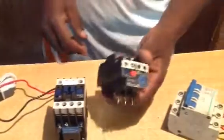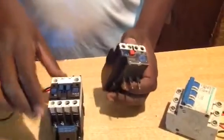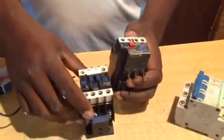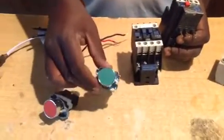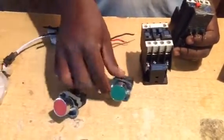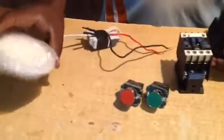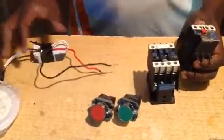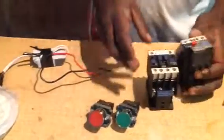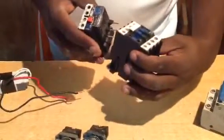This is the relay and then we have our contactor here which is normally open. We have this start button which is normally open and our stop button which is normally closed. Then this is our lamp, it will act like a motor. So we start our connection.